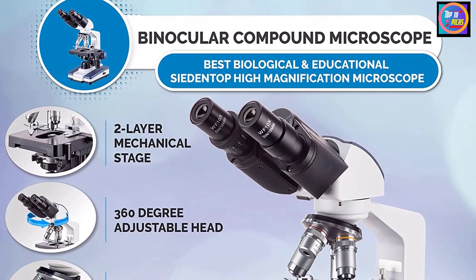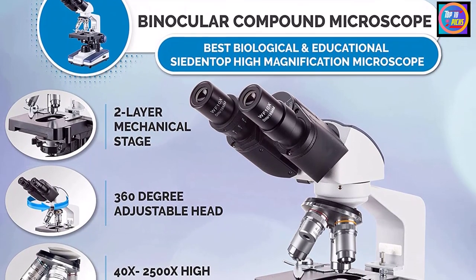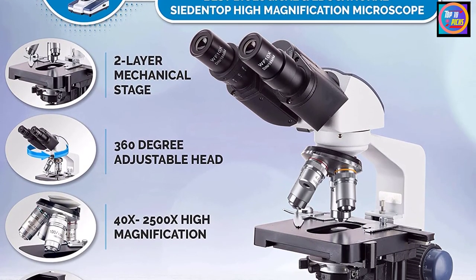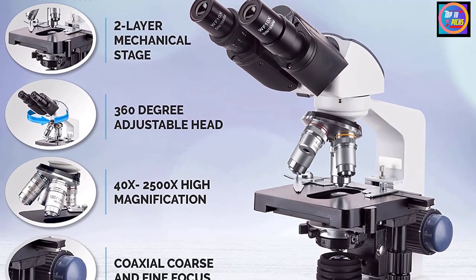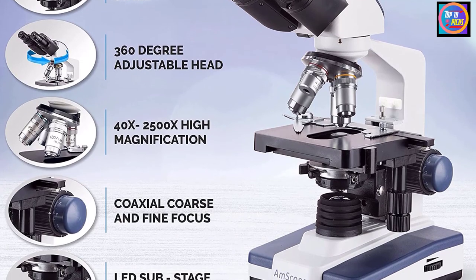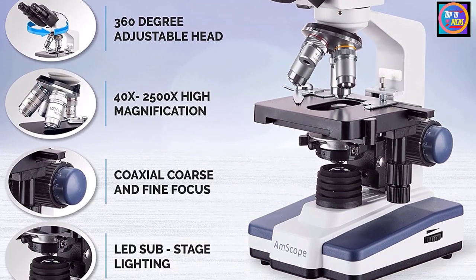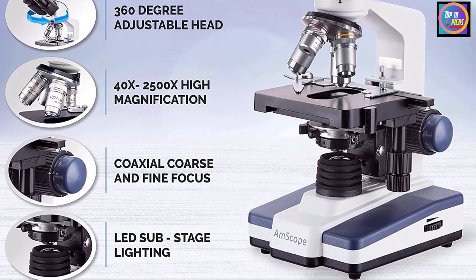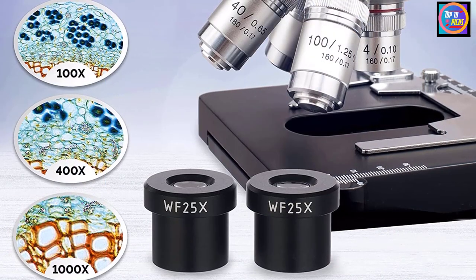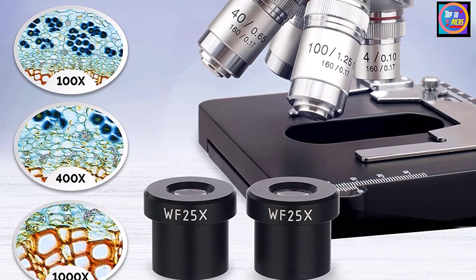The Siedentopf binocular head has interchangeable pairs of 10x wide field and 25x wide field eyepieces with 53-77 mm Siedentopf interpupillary adjustment, a fixed 30-degree vertical inclination to reduce eye and neck strain, and a 360-degree rotation capability to provide a more comprehensive view and enable sharing.